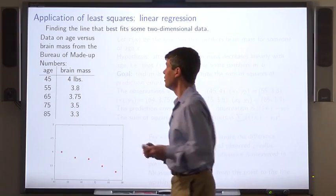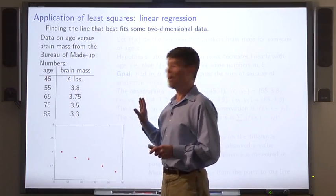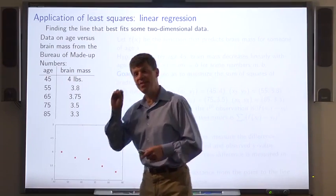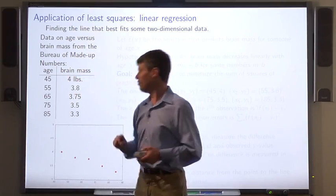Here's an application of least squares, fitting a line to data. So here's some completely made up data that gives average brain mass as a function of age after age 45.